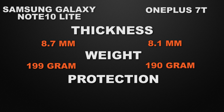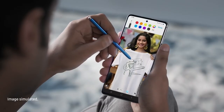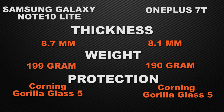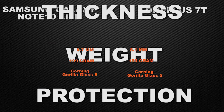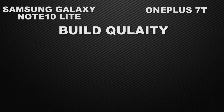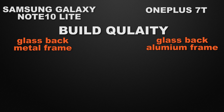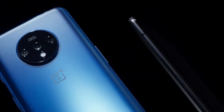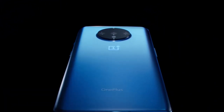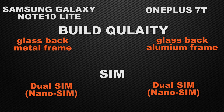Talking about the glass protection of the devices, both devices come with Corning Gorilla Glass 5 protection, so in this case there is a tie between them. Let's talk about the build quality: Note 10 Lite comes with glass back and metal frame, and OnePlus 7T has glass back and aluminium frame, so the winner is OnePlus 7T. Talking about SIM, both devices come with dual SIM support, so there is a tie between them.